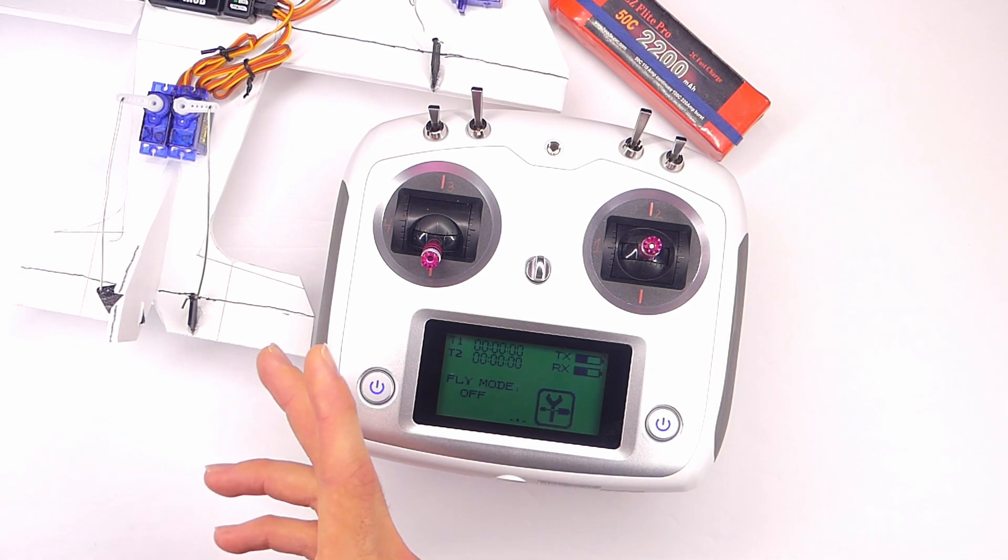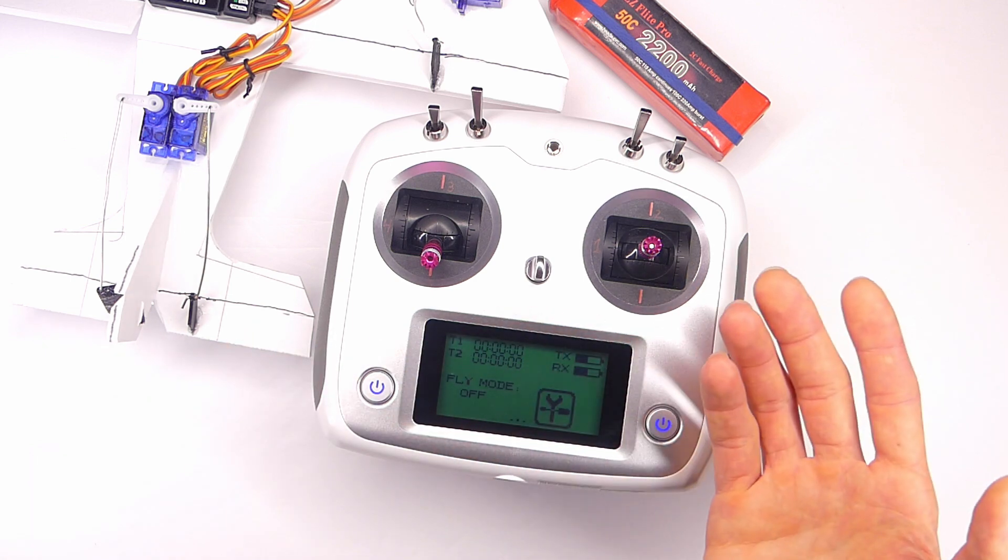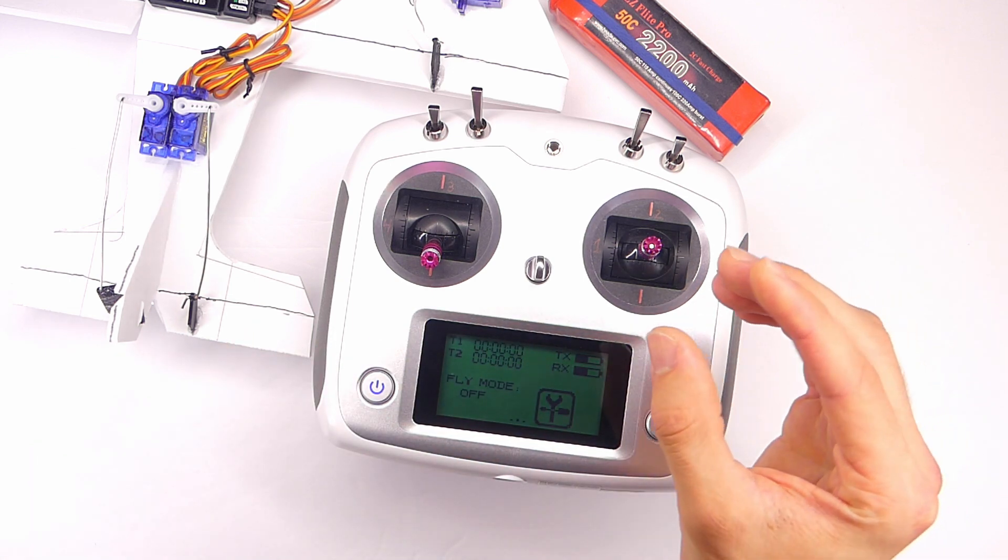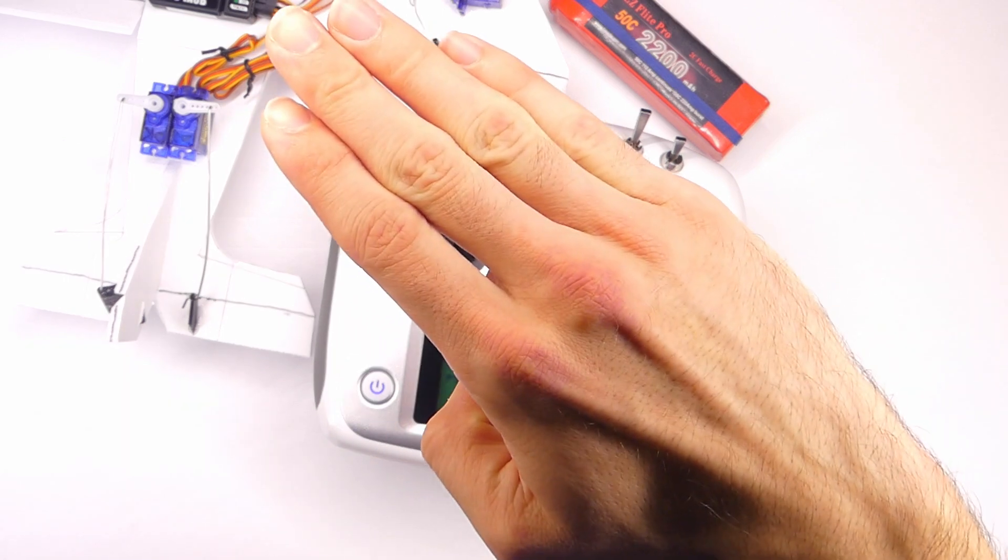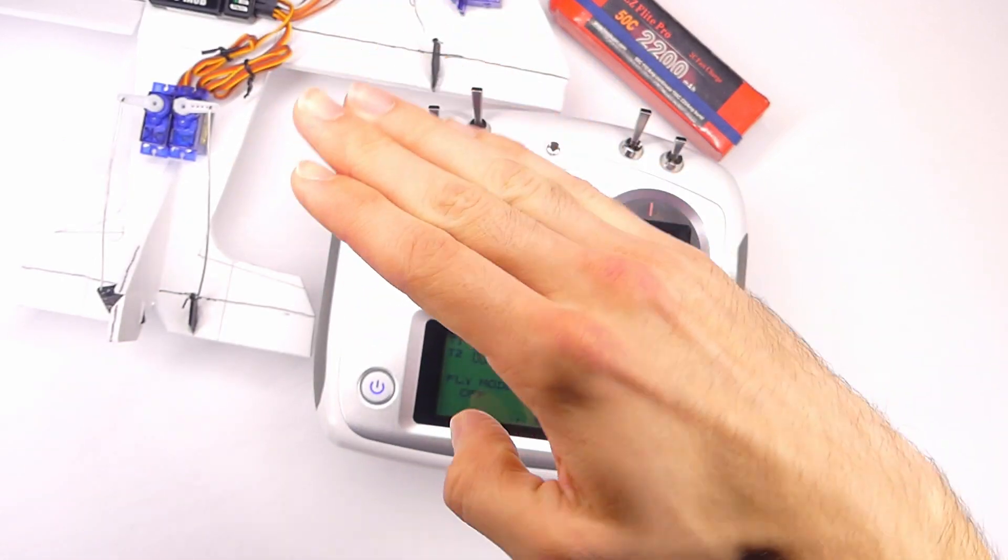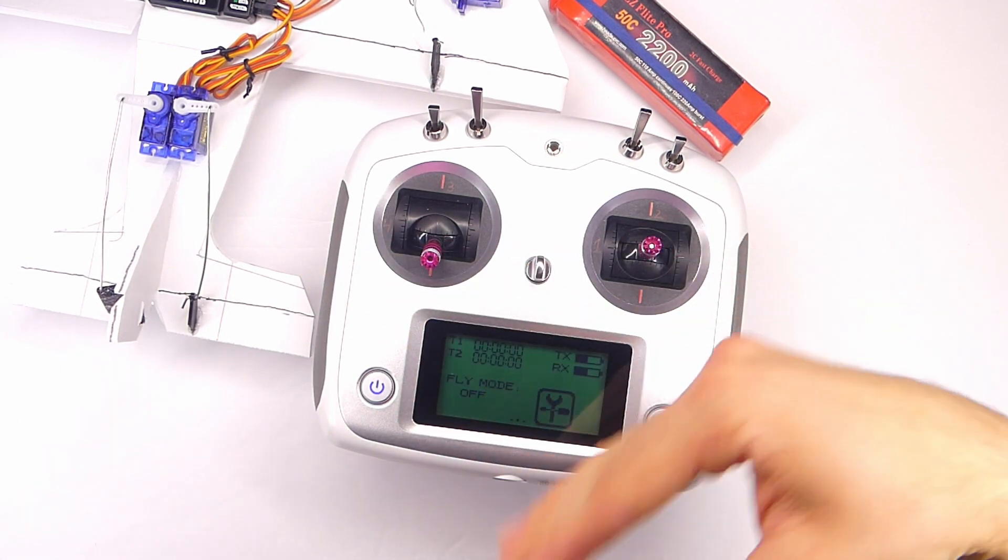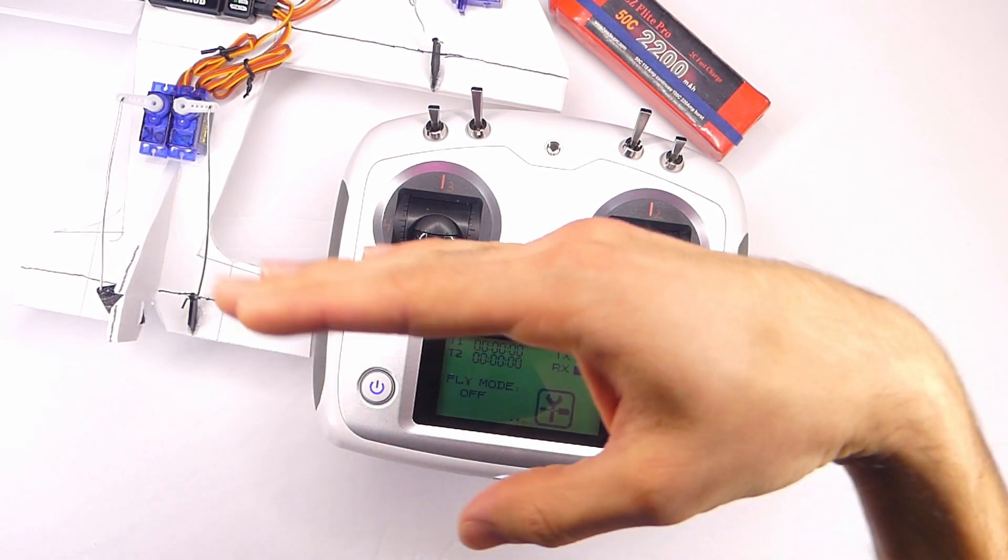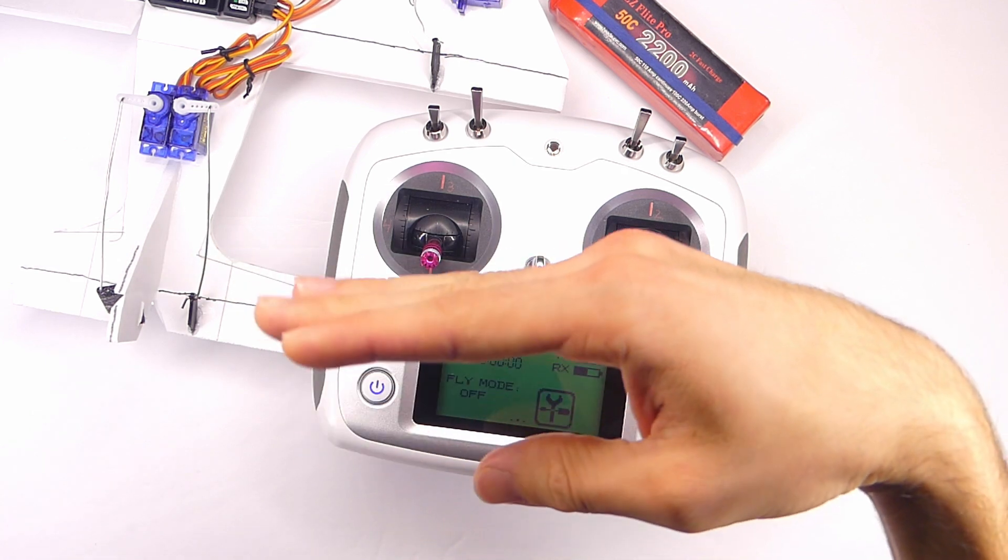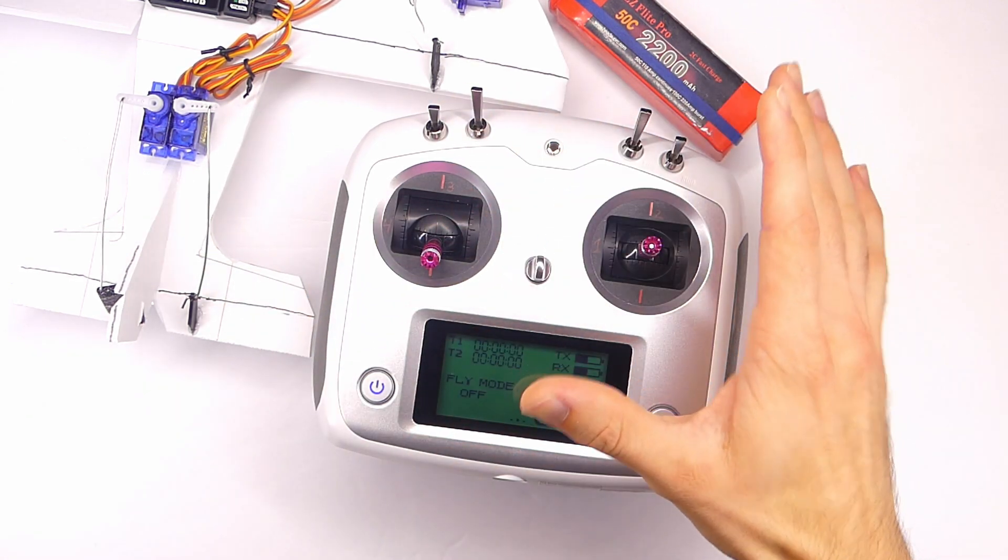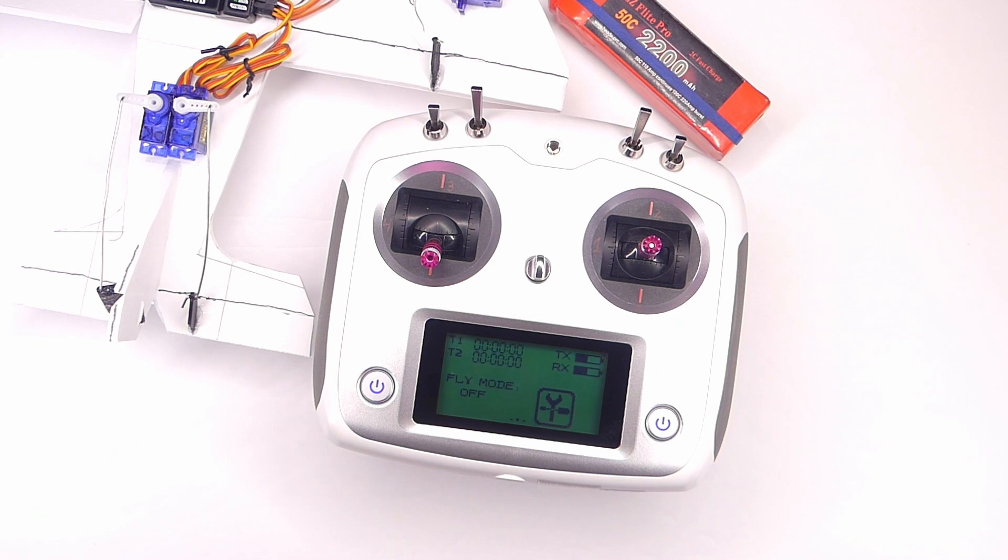And also maybe you have a model airplane that has landing gear or something, and you need the landing gear to come up, but you don't want it to come up too far and damage the airplane. So by limiting the end point of the servo that's controlling the landing gear, you could have it come up just the right amount and stop and not damage anything.